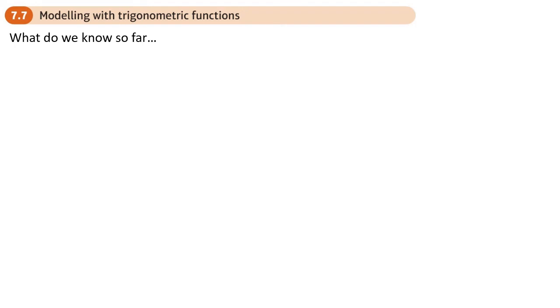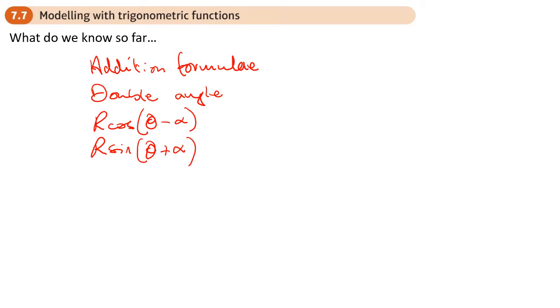This is the last section in the Trigonometry and Modeling Chapter, Chapter 7 in the Period 2 book, and this is Modeling with Trig Functions. Basically, these can involve anything that we've used so far, so they may involve the addition formulae or the double angle formulae.